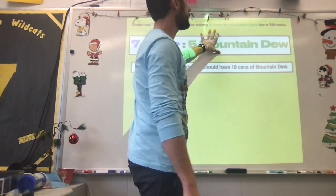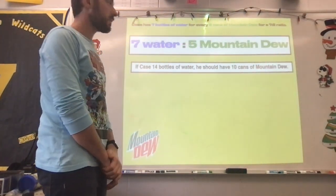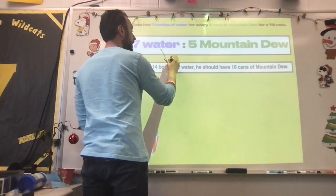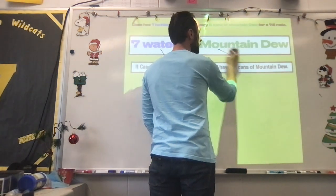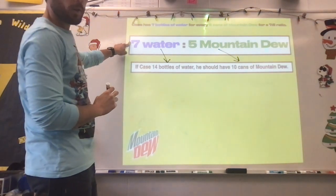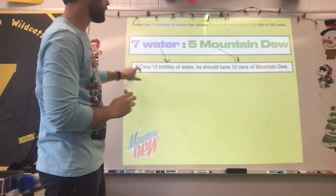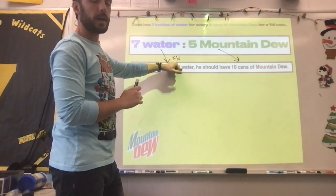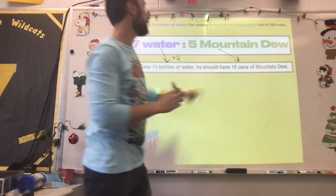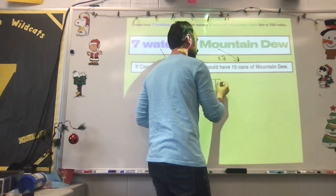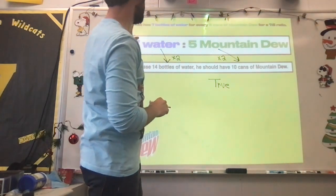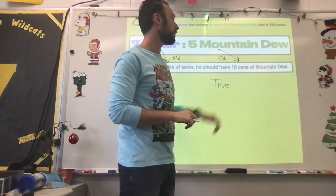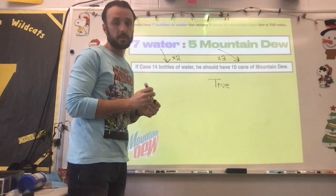Once again, seven water, five Mountain Dew. Now it says, if Case has 14 bottles of water, he should have 10 cans of Mountain Dew. We're going from water to water here, Mountain Dew to Mountain Dew there. We had seven water here, 14 water here. How does seven become 14? Times two. And if this would be an equivalent ratio, we'd have to use that same factor of two over here as well. It is five times two, 10. That is going to be a true statement.